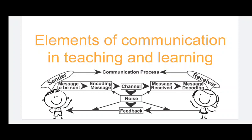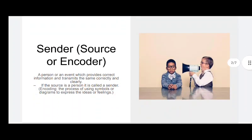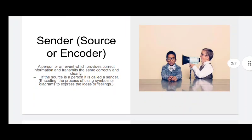There is a message which is in encoding, there is a proper channel, then message received, then message decoding. In between there is noise, and feedback is also there. So let us discuss one by one. Coming on the sender, or source, or encoder — it is the person who is sending some message, then that person is called the sender.